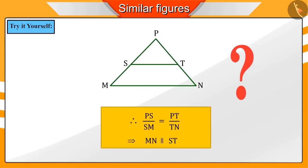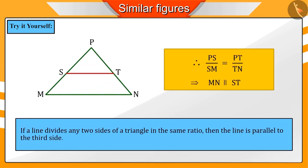Can you test the converse of this theorem? Will this also be true? If a line divides any two sides of the triangle in the same ratio, then this line is parallel to the third side of the triangle.